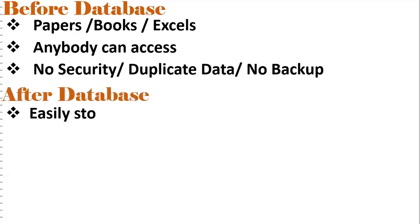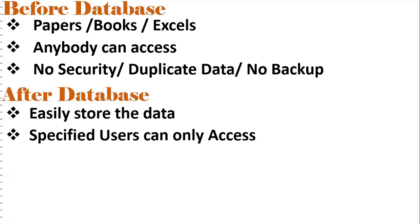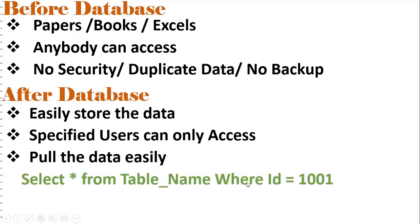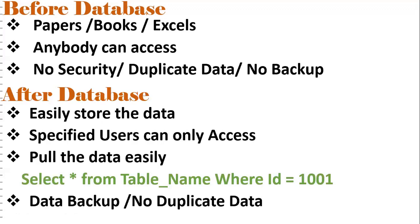With software databases, we can easily store data. Only special users can access it, so there is security. We can easily pull data — for example, you can simply run SELECT FROM table_name WHERE ID = 1001 to retrieve specific records. We also have data backup — daily, hourly, monthly, or quarterly based on company requirements — and there will be no duplicate data. These are the advantages of using a database.